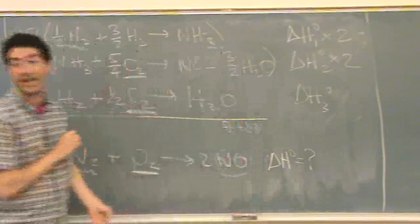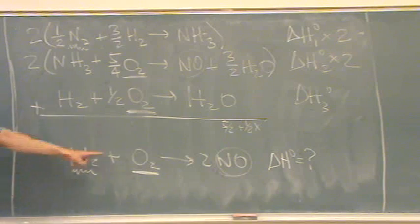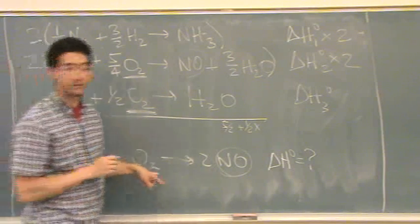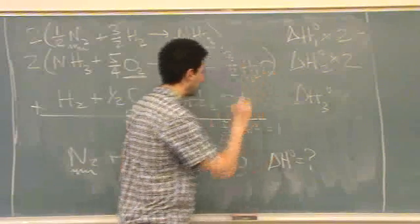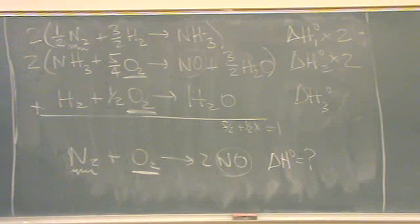So, 5 halves plus 1 half. This is not yet multiplied. 1 half. I could multiply it by something. I'll just say X. Has to equal, must equal 1. So, what's X?